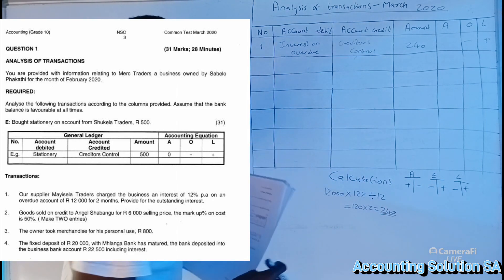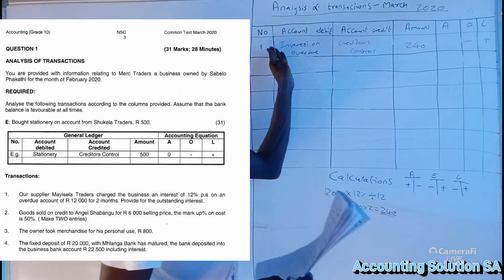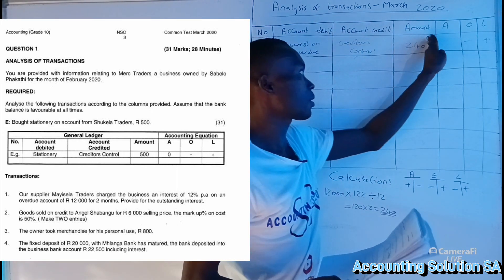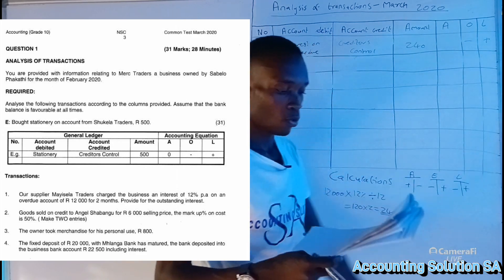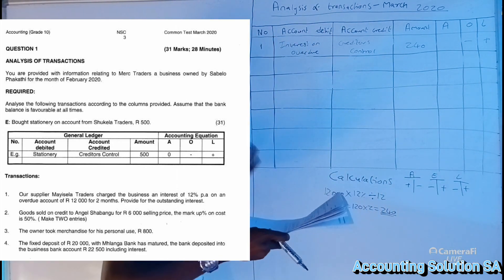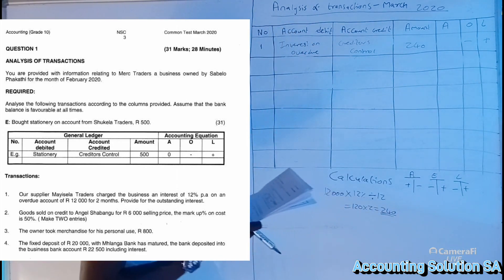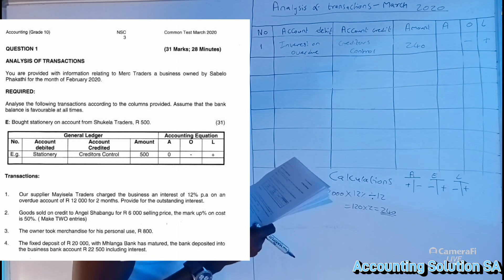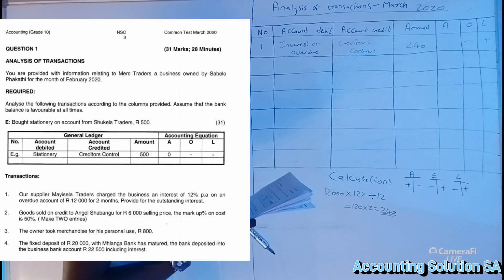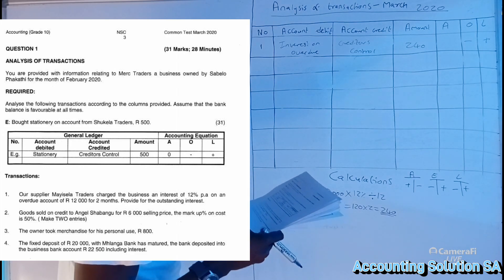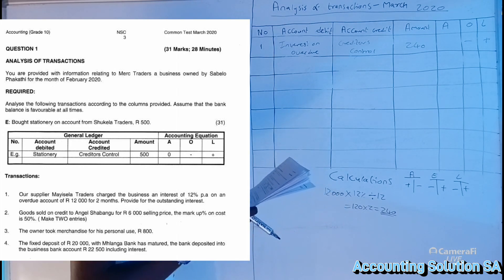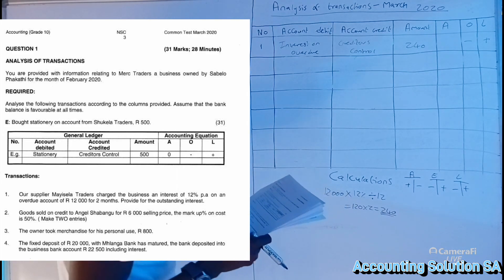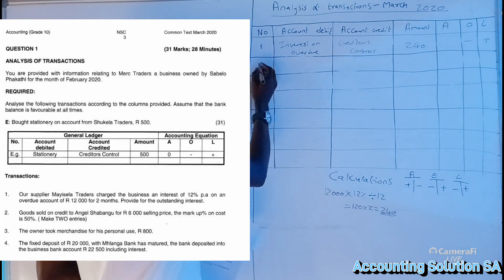That is how you answer this — there are five marks available for this transaction. Now number two: goods sold on credit to Angel Sawangufo at a selling price of R6,000. The markup on cost is 50 percent, and we need to make two entries.